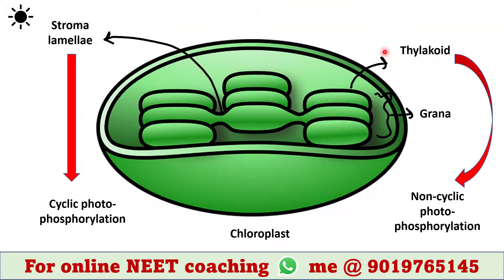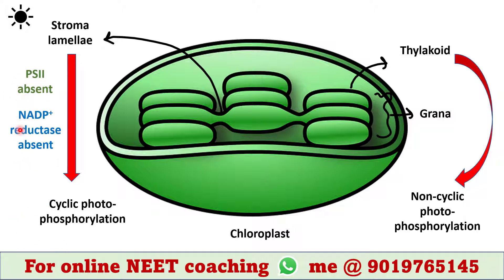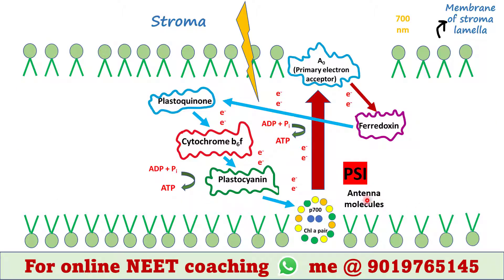Now let's talk about cyclic photophosphorylation. The Z scheme and non-cyclic photophosphorylation occur in the thylakoid membrane of the chloroplast, but when it occurs in stroma lamellae the process gets modified. In stroma lamellae, PS2 is absent and it also lacks NADP+ reductase enzyme. So when only PS1 is functional, it absorbs sunlight of 700 nanometer wavelength, gets excited, and releases two electrons.